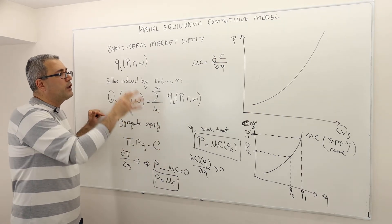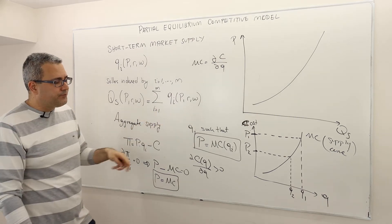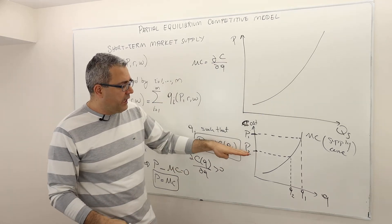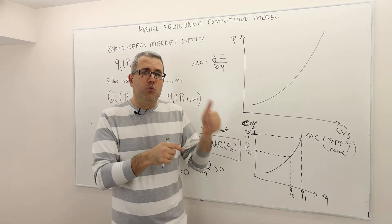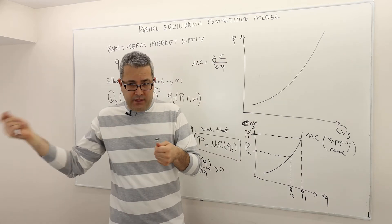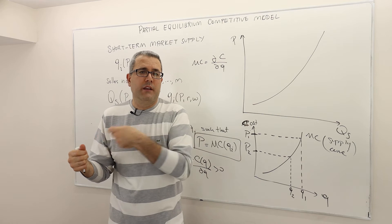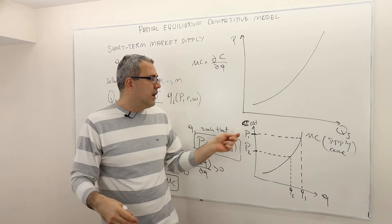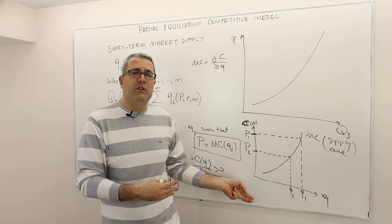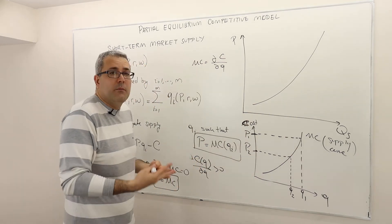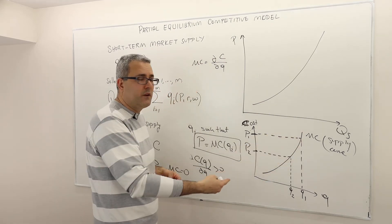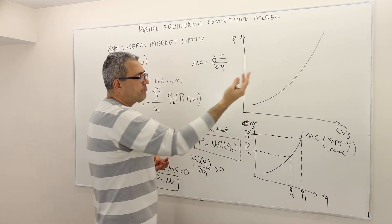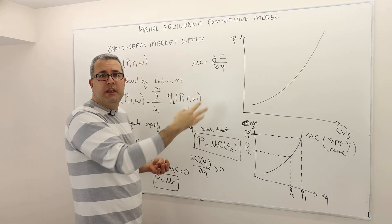From the individual firm, how do we go to the market supply? Simple — we aggregate them. If there are 100 firms with similar technology, just add them up. For any price level P2, look at how much quantity firm one can produce, how much firm two can produce, do this for all firms, then add up all those quantities. Do the same for P1 and for all prices — that's how we get the market supply curve. Since the individual firm's short-run marginal cost curve is increasing, the market supply curve should also be an increasing function.